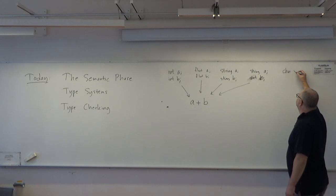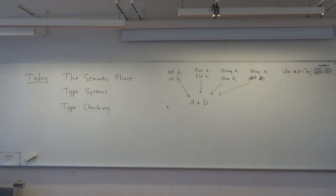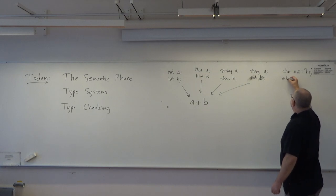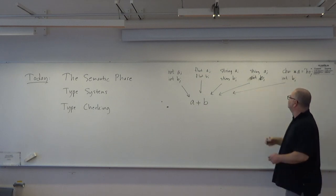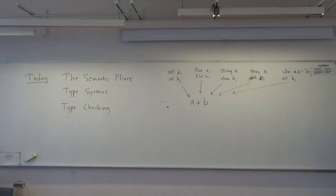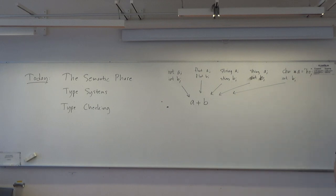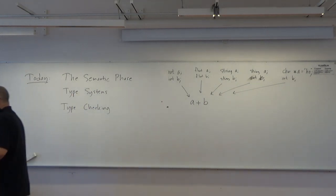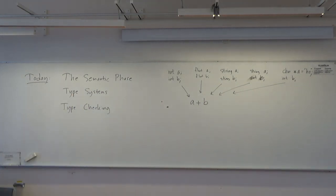Because a string in C is a pointer to the first character in an array of characters. And if B is an integer, what happens in C? You move forward in the string the number of places that B says. So if B is 1, you would get the string that just contains the second character. So the semantic phase works a lot with data types and analyzes the program in terms of data types to decide what to do with the code.